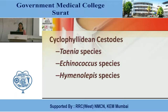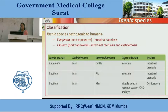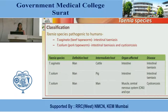Cyclophyllidean cestodes include Taenia species, Echinococcus species, and Hymenolepis species. Taenia species pathogenic to humans are classified into two types: Taenia saginata — also called the beef tapeworm — which causes intestinal taeniasis; and Taenia solium — also called the pork tapeworm — which causes intestinal taeniasis and cysticercosis.